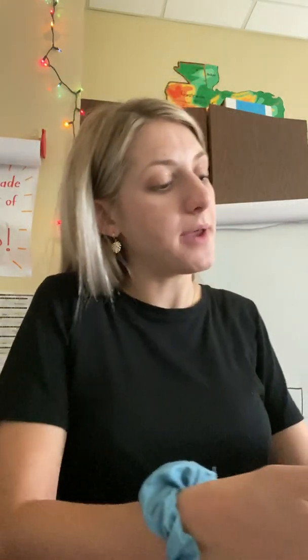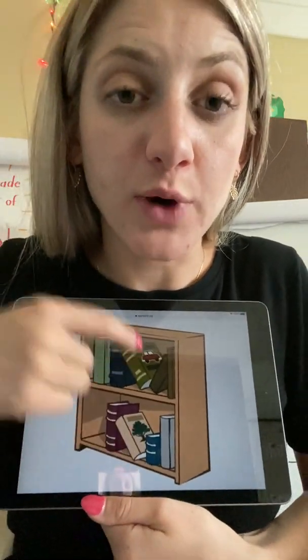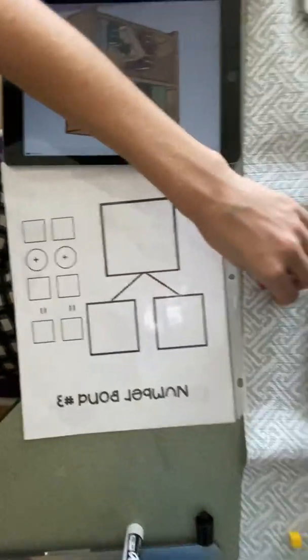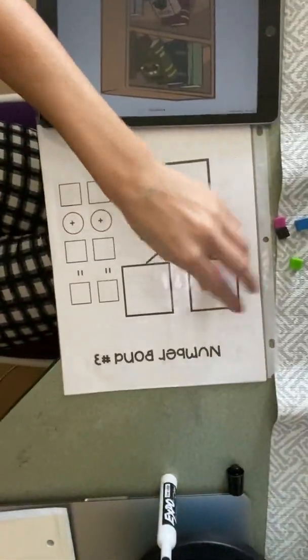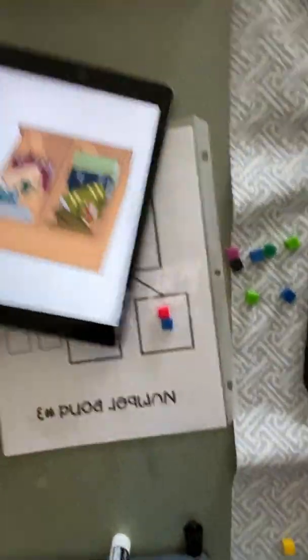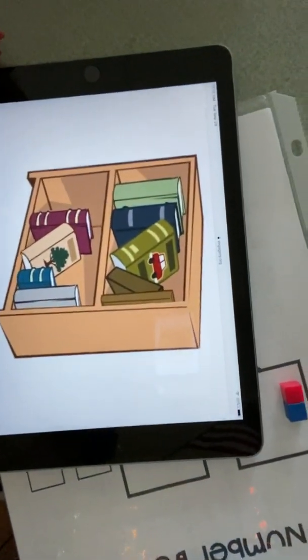Yeah. All right, so I'm going to take all my cubes off my board and in my hand. I'm going to erase everything I did on my board. I erased it all. Okay. My first group is going to be two, the two books that have pictures on them. So in my number bond, I'm going to take two of my cubes and put them in my first part box. That is my first part. Okay. And then I'm going to come back to the picture and I'm going to look.